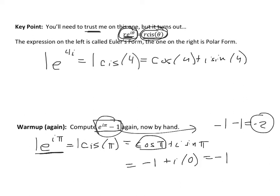So this ability to take e with an imaginary power and turn it into polar form is going to allow us to unlock the ability to do a complex power of any number. Really, the rest of this video is just us practicing that and looking at other ways and places that this can come up.